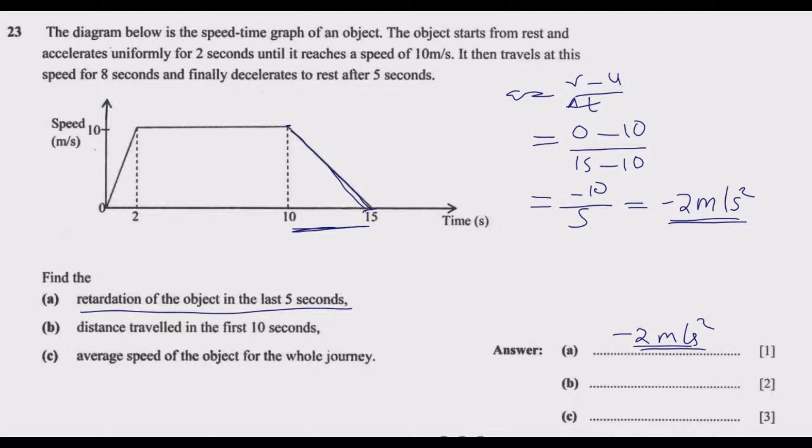Part B: distance traveled in the first 10 seconds. To find this, we need to find the area under the first part which we'll call A, then the area under B. That will give us the total distance traveled. Distance traveled equals area under A plus area under B.